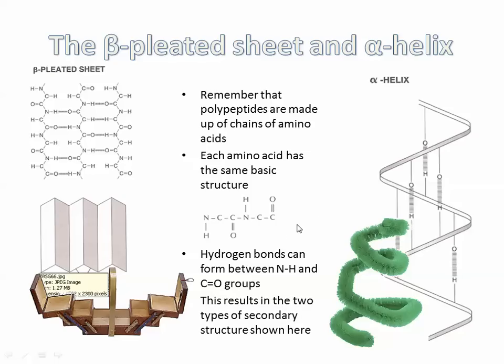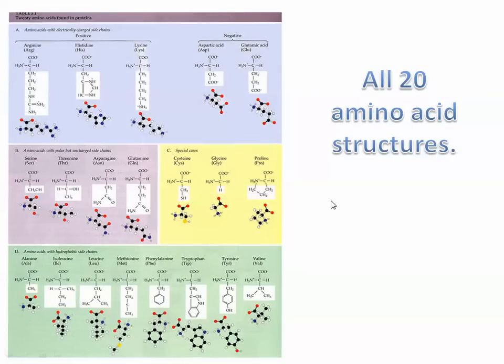Next we go into tertiary structure, which is really where the actual shape and properties of the protein come into play. If it's an enzyme, we're looking for a specific three-dimensional shape — the active site on an enzyme has a specific shape because of these amino acids and the interactions between their R groups.